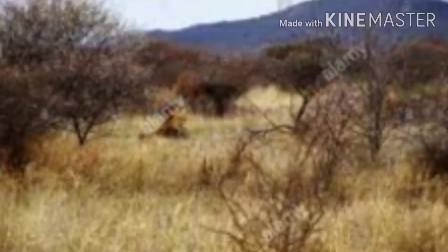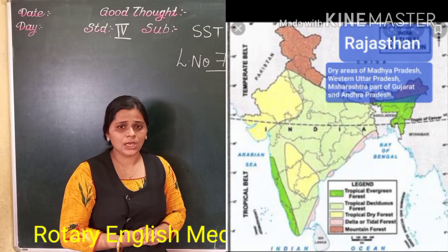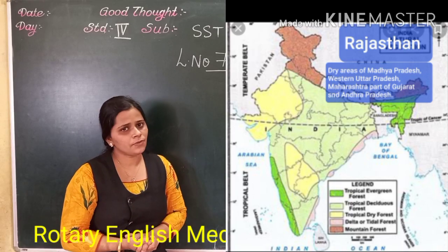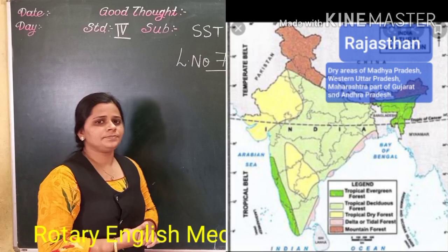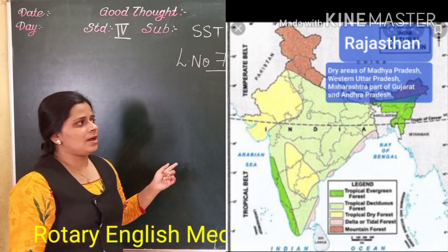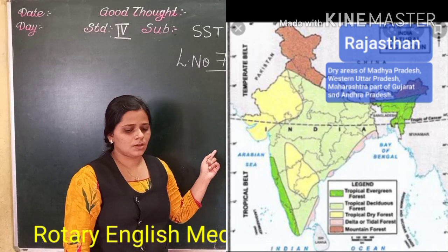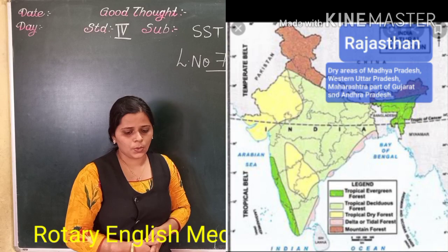In these types of forests, plants and shrubs can live without water for a longer time. As you know, Thorn Forest is mostly found in dry areas — in Rajasthan, dry areas of Madhya Pradesh, western Uttar Pradesh, Maharashtra and parts of Gujarat and Andhra Pradesh.